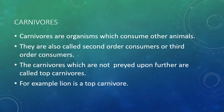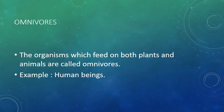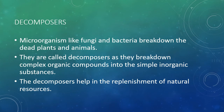Carnivores are organisms which consume other animals. They are also called second-order consumers or third-order consumers. The carnivores which are not preyed upon further are called top carnivores. For example, lion is a top carnivore. The organisms which feed on both plants and animals are called omnivores, for example, human beings. Micro-organisms like fungi and bacteria break down the dead plants and animals. They are called decomposers as they break down complex organic compounds into simple inorganic substances. The decomposers help in the replenishment of natural resources.